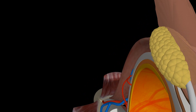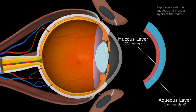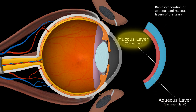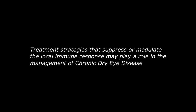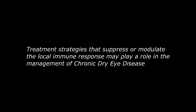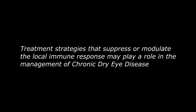With the meibomian gland providing the moisture-trapping lipid layer over the corneal and scleral surfaces, damage to this gland can lead to rapid evaporation of the aqueous and mucus components of the tears, exacerbating the symptoms of DED. As such, treatment strategies that suppress or modulate the local immune response may play a role in the management of chronic dry eye disease.